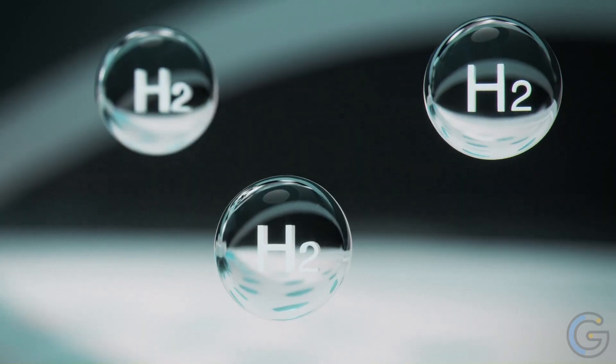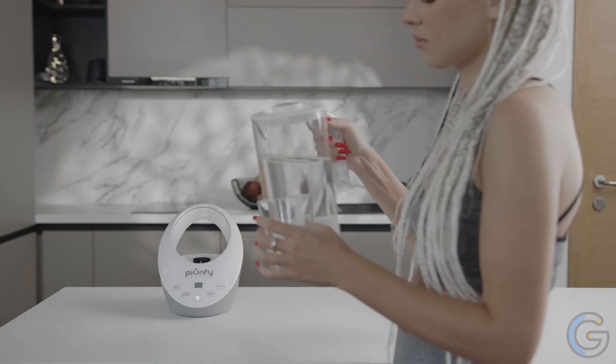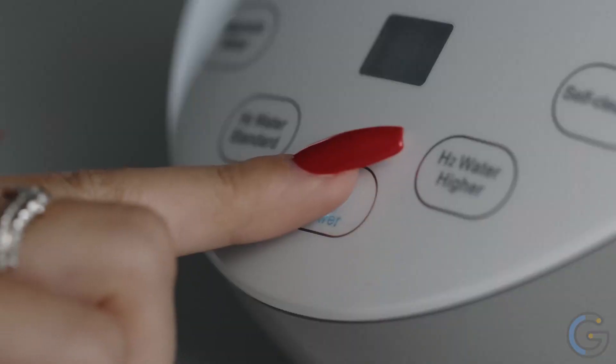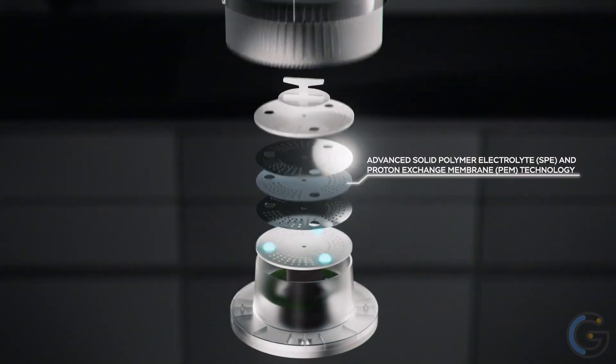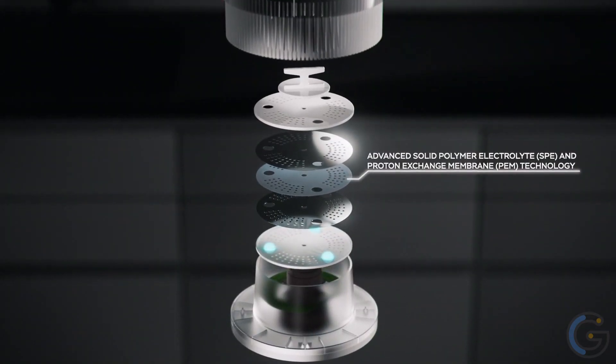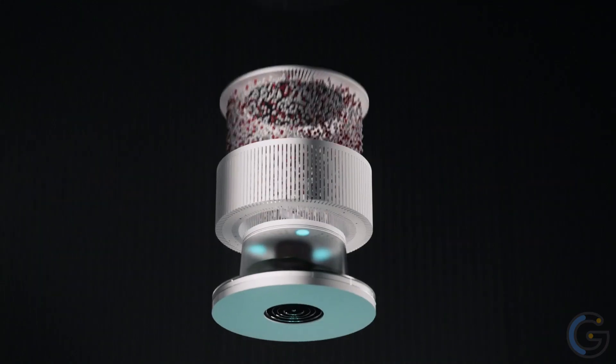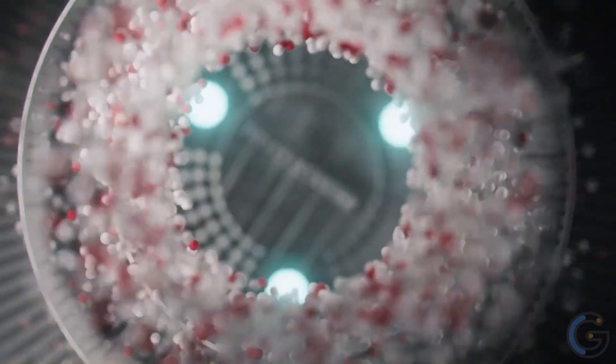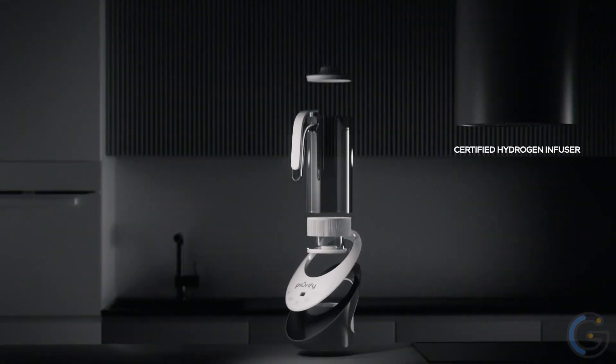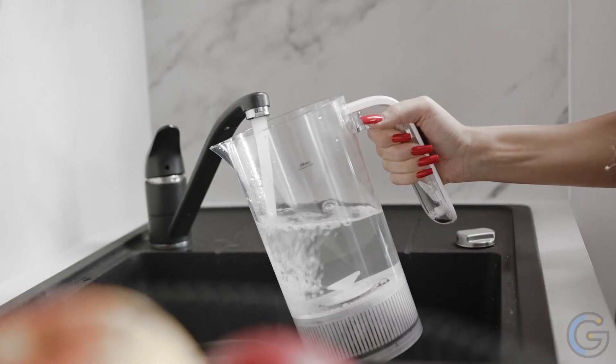This rich hydrogen water generator electrolysis jug uses SPE and PEM concentrator technology. Together, these expel byproducts such as ozone and create antioxidant water with maximum bioavailability. Furthermore, it not only improves purified water pH levels, but also filters with calcium sulfite. In fact, its BPA-free built-in calcium sulfite filter is filled with calcium sulfite balls, CaSO3 balls. These remove 99% of chlorine and chloramines from your drinking water.